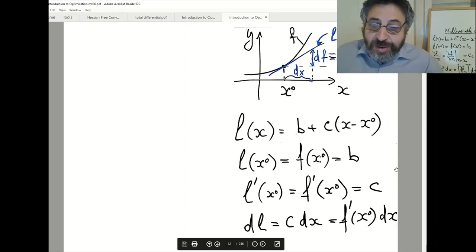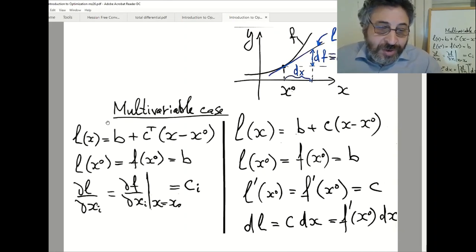Now I am ready to come to multidimensional case, which is written here. So in multidimensional case, linear function is a constant, scalar b plus c transpose x minus x0. c and x are vectors.